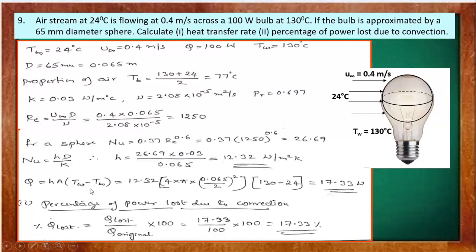Q = h × A × (Tw − T∞). For a sphere, don't worry about average vs. local — whatever we get is the average. The area of the sphere is 4πr² = 4π × (D/2)². Multiplying h by this area and the temperature difference gives Q = 17.33 W of heat lost by convection.